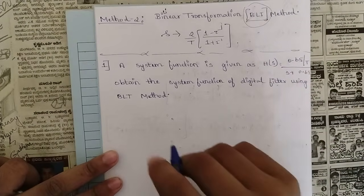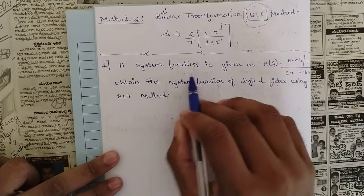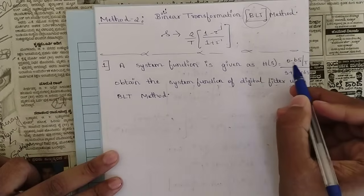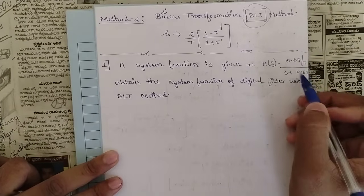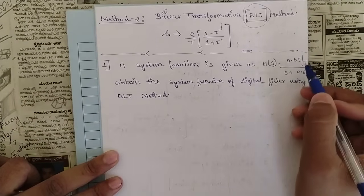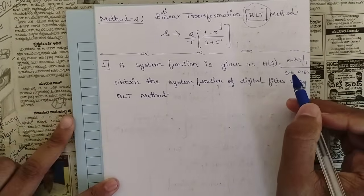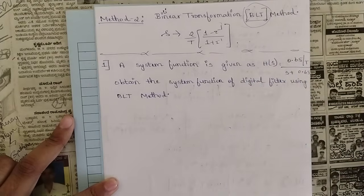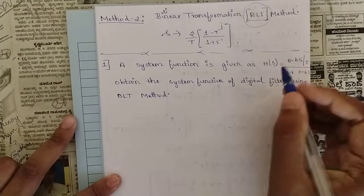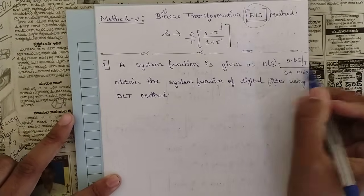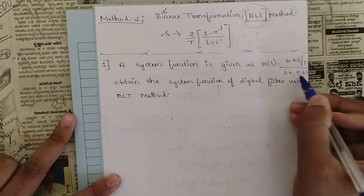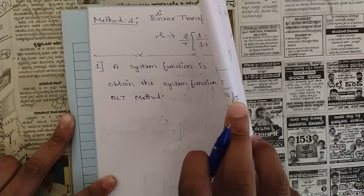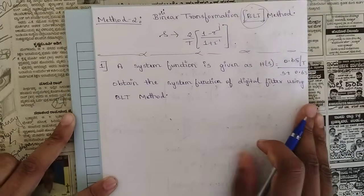Let us see two problems to understand this method very carefully. A system function is given as H(s) = (0.65/T) / (s + 0.65/T).